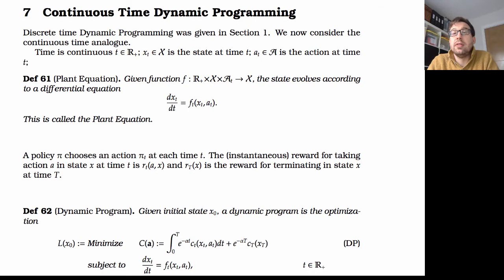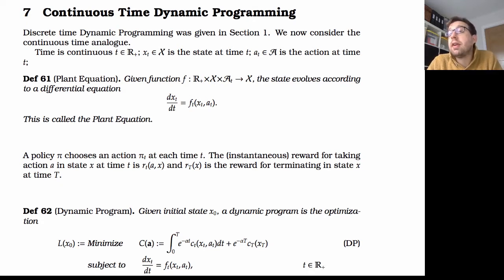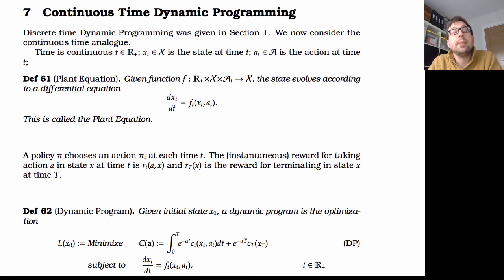Then we'll work towards the diffusion analog of Markov decision processes — we want to end up doing optimal control over diffusion processes. We'll start with a deterministic dynamic programming framework, and within this we'll cover a specific example called linear quadratic regularization, which is one of the most common control frameworks. It doesn't have to be continuous time, but it fits quite nicely within that and is commonly applied in engineering settings.